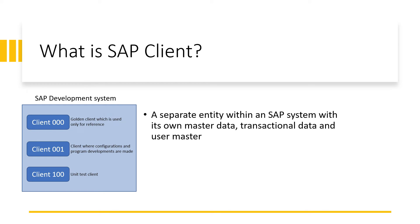As I mentioned before, all these three different types of data are client specific, which means they can be read or written only by the assigned client and are protected from other clients. But there are also client independent or cross-client changes possible. For example, if the source code of the SAP system is changed or a new report is created, that new report will be available to all the clients in a particular SAP system, because the source code of an SAP system is common to all clients within that system.